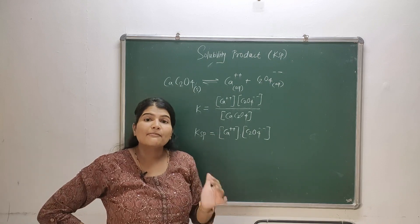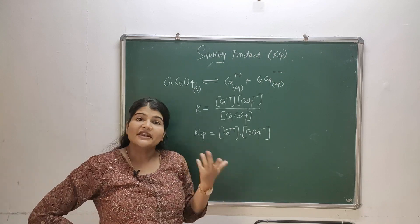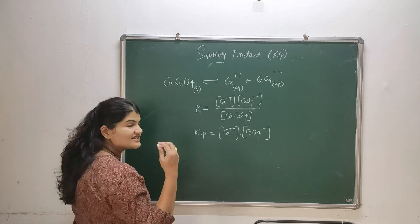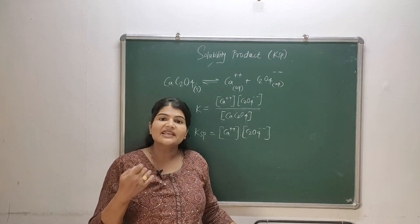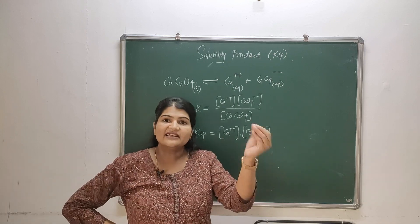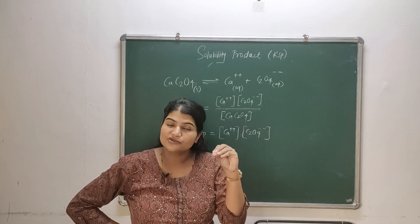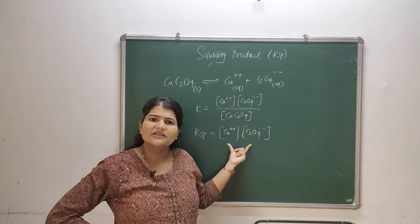Now why this solubility product is important or what does it tell us? So it tells us very important information about precipitation of the solvent. So how we can predict the precipitation? This is nothing but ionic product, but ionic product we can take at any stage of the solution.